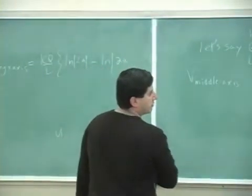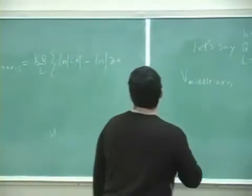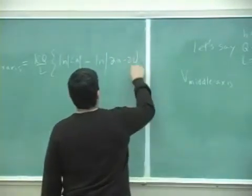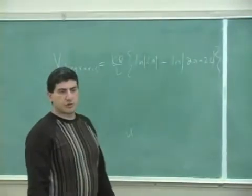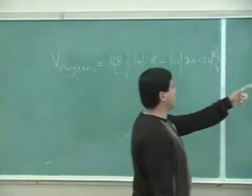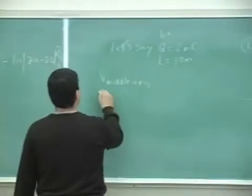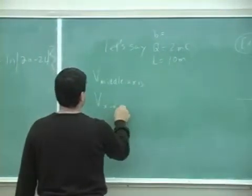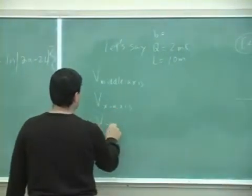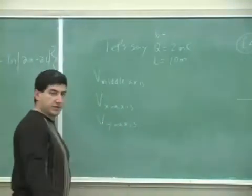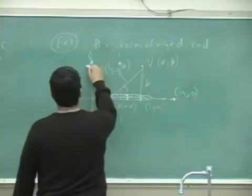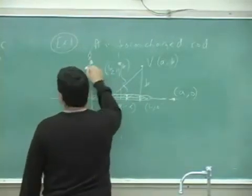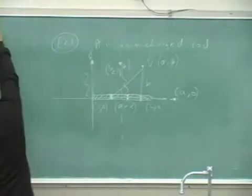a minus l plus 2a minus 2l. That's what it's equal to. So those are along the x-axis. So let's find v along the middle axis, v along the x-axis, v along the y-axis. So we could do all three, and then we'll finish with that. So let's give it some number here.